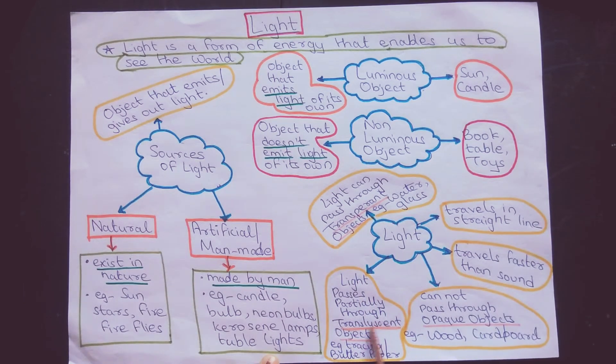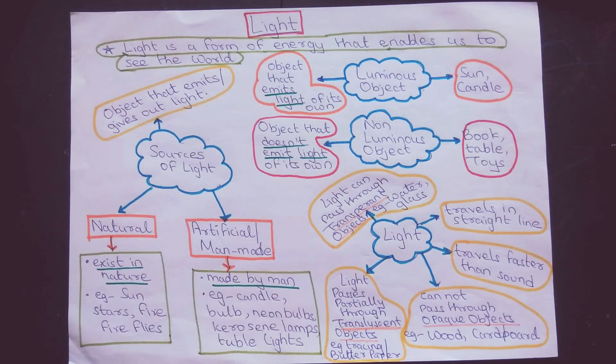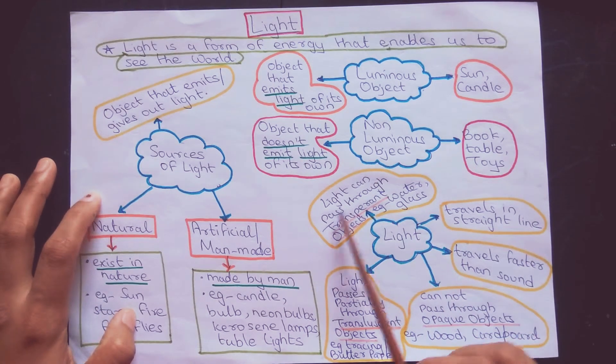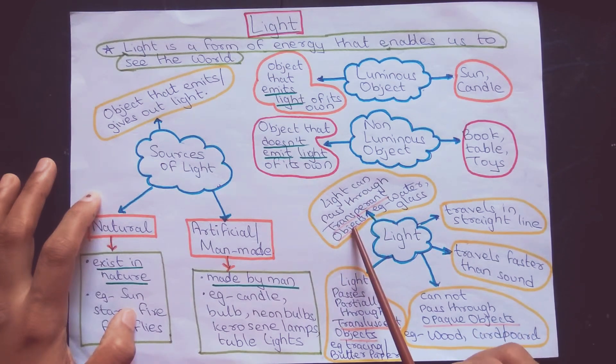Light passes partially through translucent objects or substances. Examples include tracing paper and butter paper. That means tracing paper and butter paper partially allow the light to pass through them.